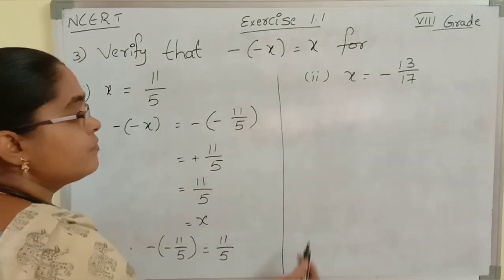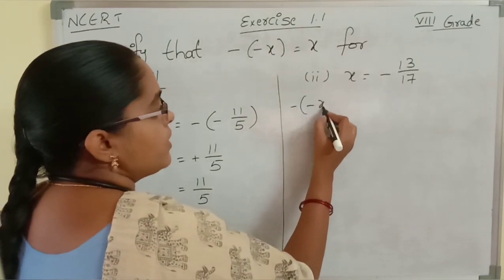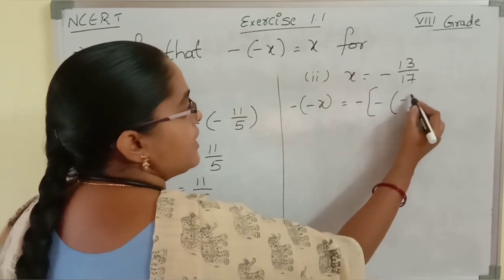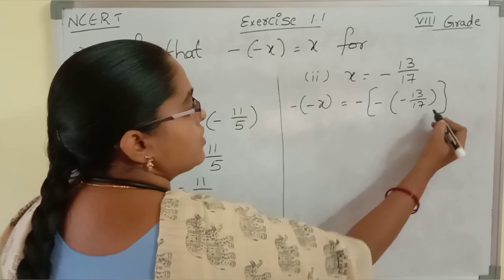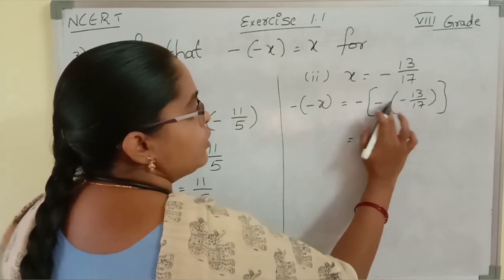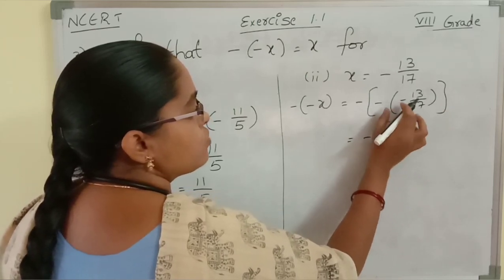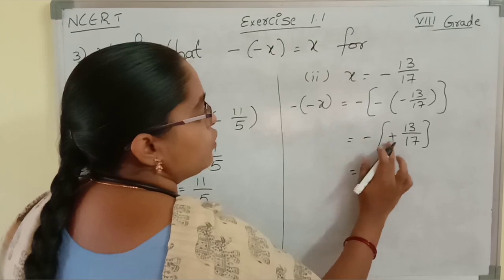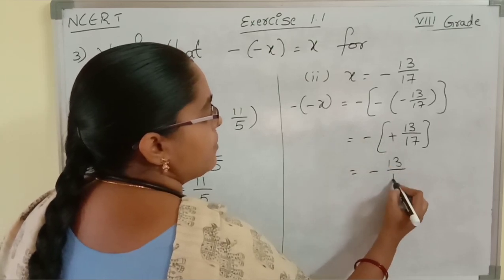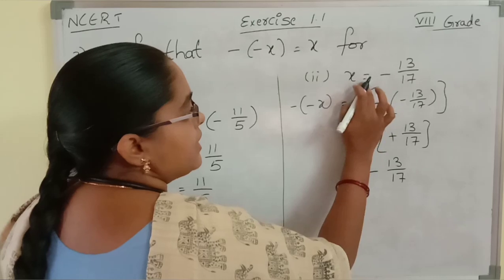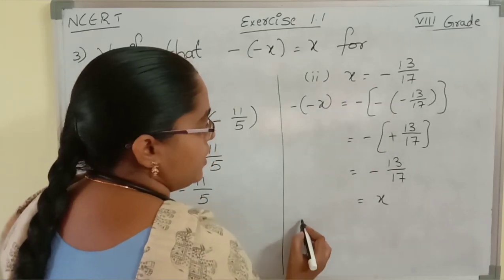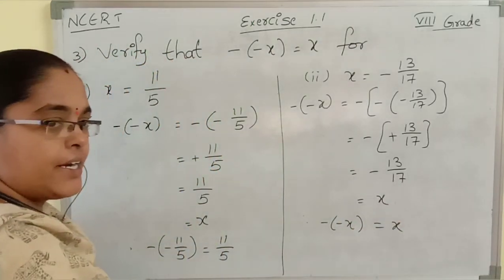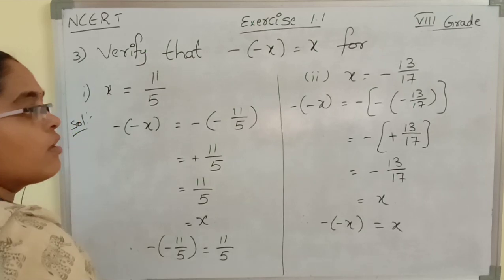Now see the second one. Taking minus of minus x, which means minus of minus 13 by 17. Inside the bracket we have two minuses, so minus into minus becomes plus 13 by 17. Now minus into plus is nothing but minus 13 by 17, which is x. Therefore minus of minus x equals x. Hence verified. So like this we will solve this type of problem.